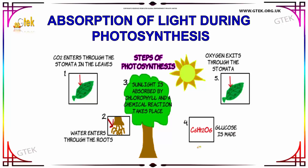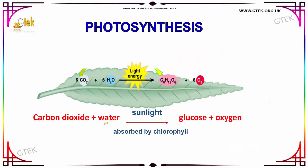From the chemical reaction, glucose is made — you can see the glucose here. Finally, oxygen exits through the stomata. So this is the whole process of photosynthesis.